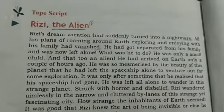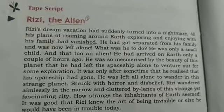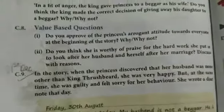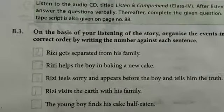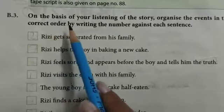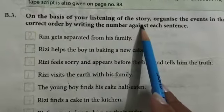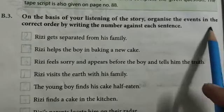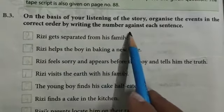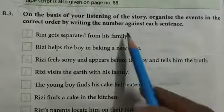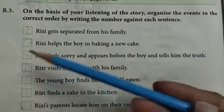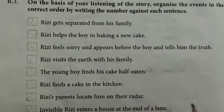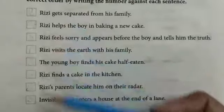Good morning dear students. We are doing Unit 3. Yesterday I explained the tape script, and today I will explain all the exercises of this tape script. This is given on page number 76. Exercise B3: on the basis of your listening of the story, organize the events in the correct order by writing the number on each sentence. After listening to the story, you have to put the correct number in the sequence. Now I will explain what the first, second, and third lines are.